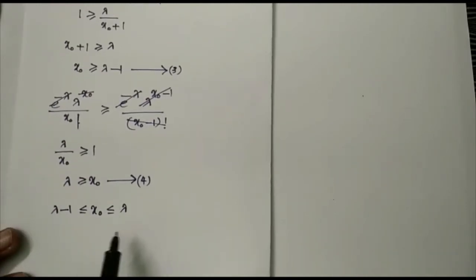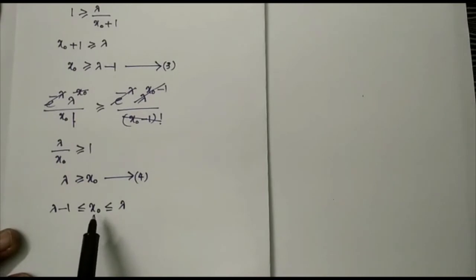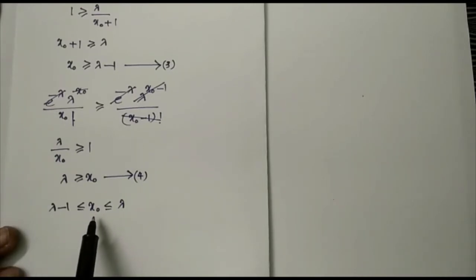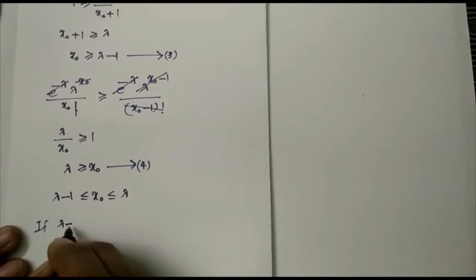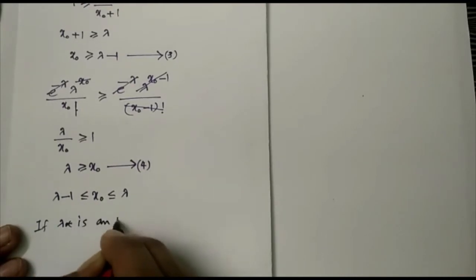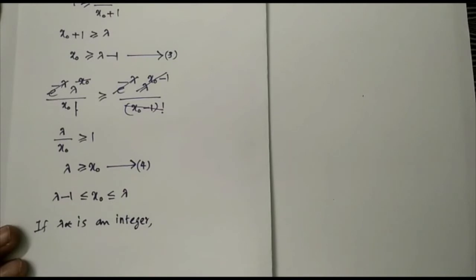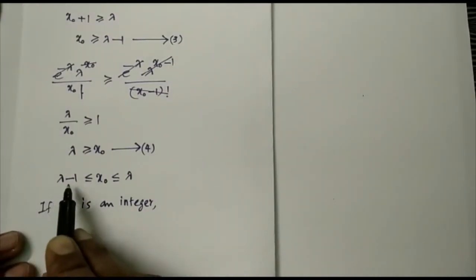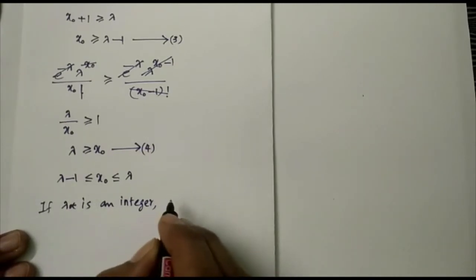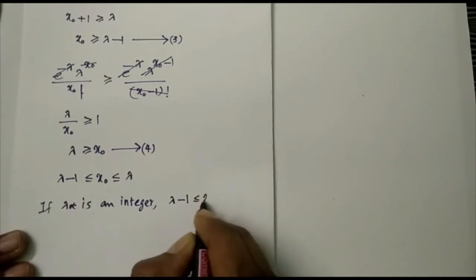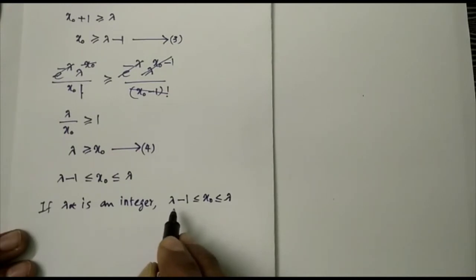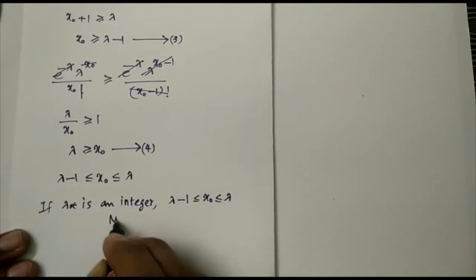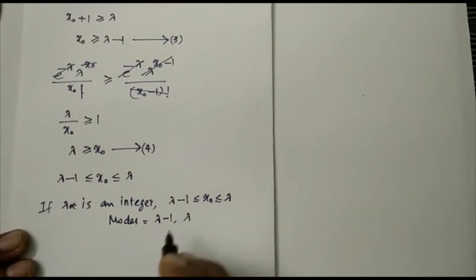Since x takes only integer values, x0 is always an integer. Now we divide into cases. If λ is an integer, then λ − 1 will also be an integer. So the mode satisfies λ − 1 ≤ x0 ≤ λ, meaning both λ − 1 and λ are integer modes. In this case, the distribution is bimodal with modes λ − 1 and λ.